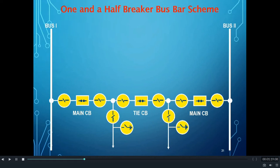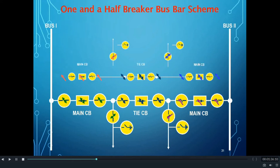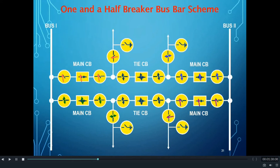Now let us see how this busbar scheme works and how it is advantageous over the double main cum transfer as well as double main and transfer busbar schemes. To understand the functioning, we consider four feeders connected to bus one and bus two.